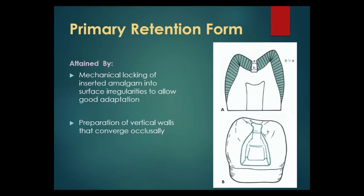Marginal amalgam requires 90-degree or greater box-like preparation and rounded axial-pulpal line angles in Class II preparation. Primary retention form is attained by mechanical locking of inserted amalgam into surface irregularities, and by mechanical means to allow good adaptation and preparation of vertical walls that converge occlusally.